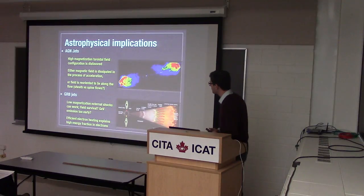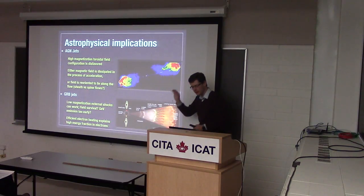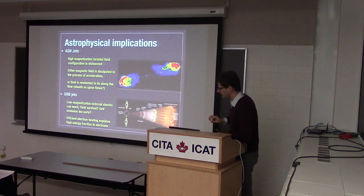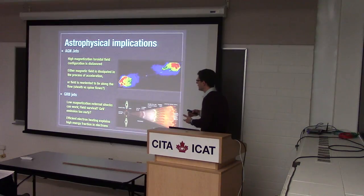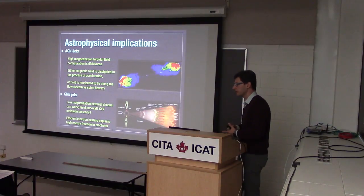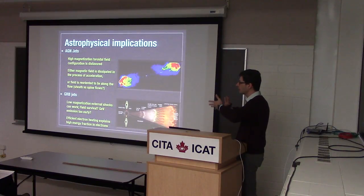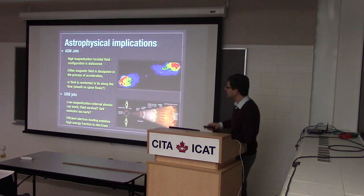For AGN jets, if there are shocks in the jet — hotspots or knots — and they're driven by toroidal fields, then direct shock acceleration would be disfavored. You have to come up with alternatives: either dissipate the magnetic field, or perhaps the field gets reoriented close to the jet edge due to shear, or perhaps the Lorentz factors are not as high as 15 and the parameter space of allowable geometries enlarges.